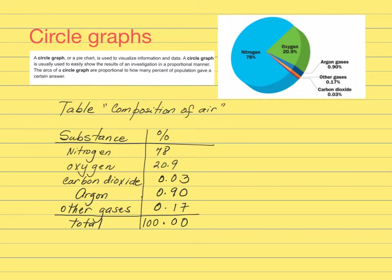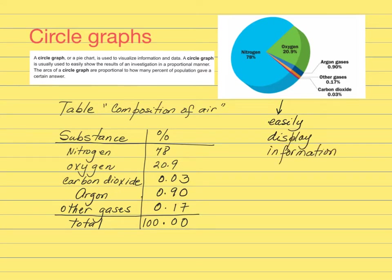Before moving to the interpretation of line graphs, I'd like to briefly discuss the other two types of graphs. For example, this is a circle graph. When are you going to use a circle graph? When you want to easily display information that contains percentages. With a circle graph, you cannot clearly see what is the independent or dependent variable, which is why we concentrate on line graphs.